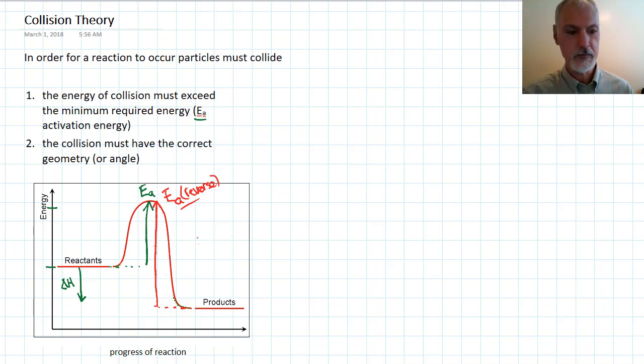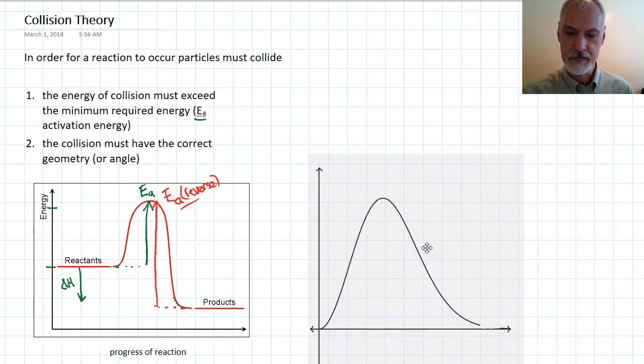We can also get it from something called a Maxwell-Boltzmann distribution graph. So let's take a look at the features of that graph. On the axis, we have the fraction of particles that have a particular kinetic energy, and on the bottom axis, we have the kinetic energy itself.